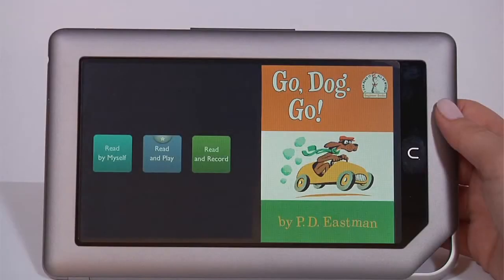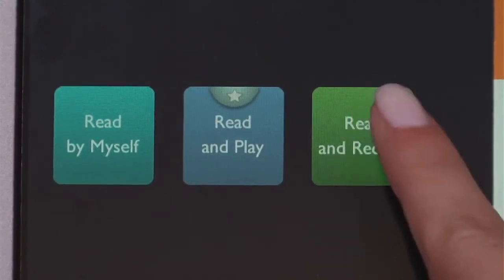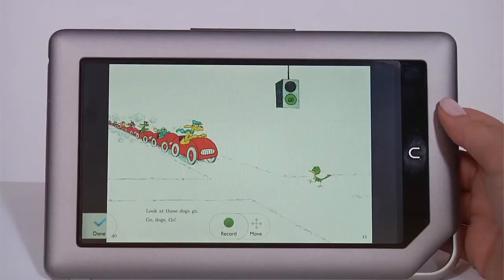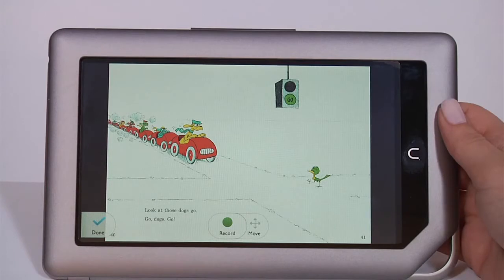To record a book, first tap the Read and Record button. When the book opens, tap Record and start reading.